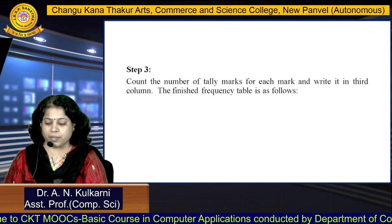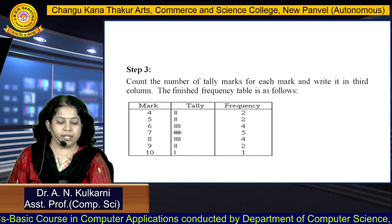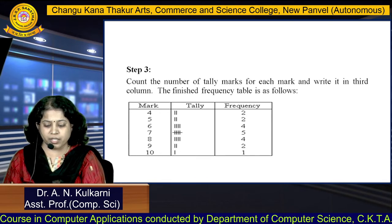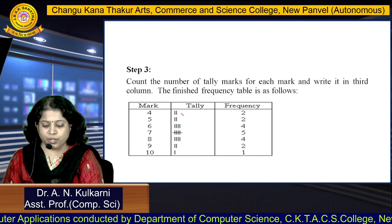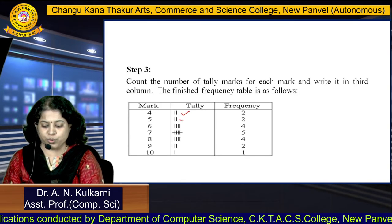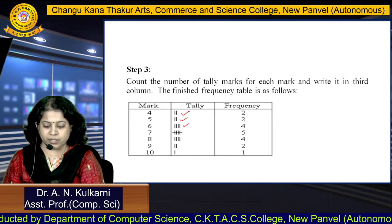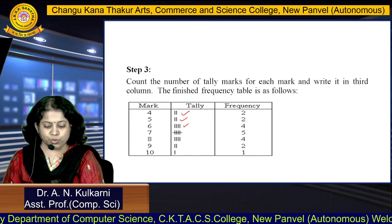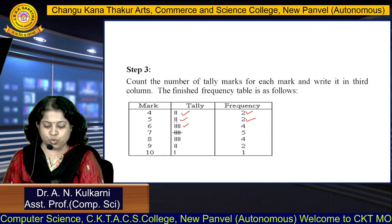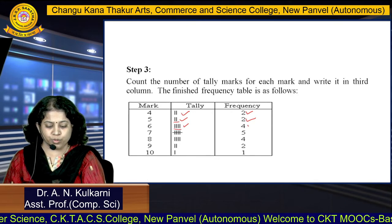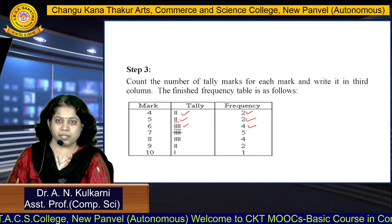Step three: count the number of tally marks for each mark and write it in the third column. The finished frequency table shows two tally marks for 4, two tally marks for 5, and four tally marks for 6. So, frequency is 2 for 4, 2 for 5, and 4 for 6. In this way, we can construct a frequency table.